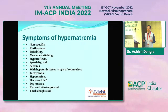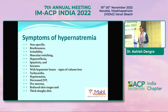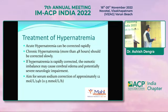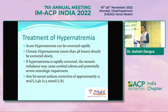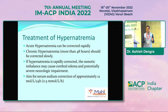Symptoms of hypernatremia can be non-specific: the patient may be irritable, restless, with hyperreflexia, spasticity, tachycardia, decreased JVP, and reduced skin turgor. Treatment requires first diagnosing whether it is acute or chronic hypernatremia. If acute, it should be corrected rapidly; if chronic - that is more than 48 hours - it should be corrected slowly. If hypernatremia is corrected very fast, osmotic imbalance can cause cerebral edema and potential severe neurological impairment. The aim for serum sodium correction should be slow: 12 mmol per liter per 24 hours.